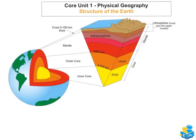This is a good diagram of the layers that make up the Earth's structure. As you can see, on the outside we've got the crust, then we have the mantle, and then we have the core. The outer core is shown in orange and the inner core in yellow.